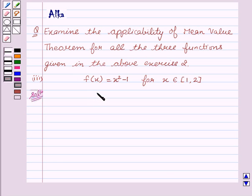We are given f(x) equal to x square minus 1 for x being the element of closed interval [1, 2]. Now since we see that the given function is a polynomial function, so it is continuous.